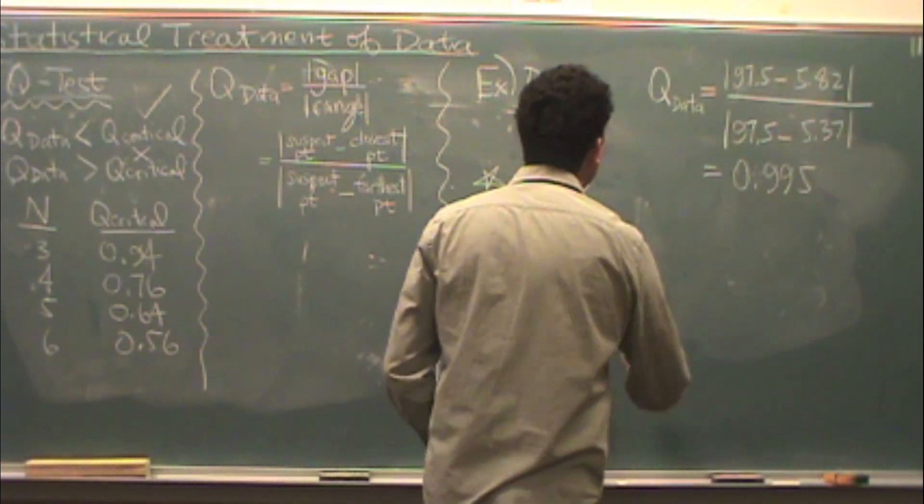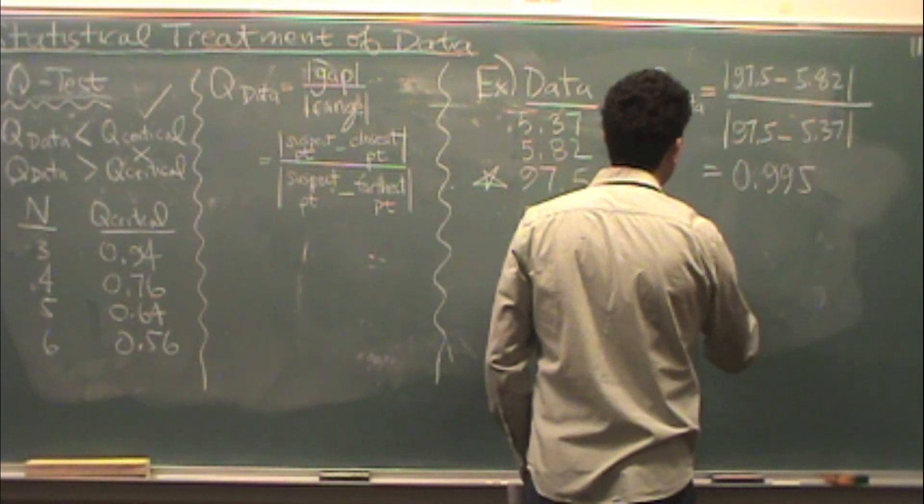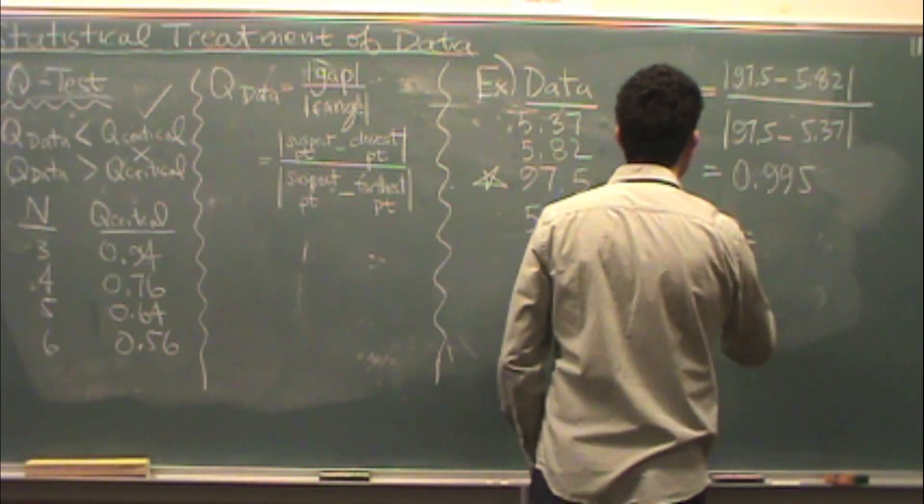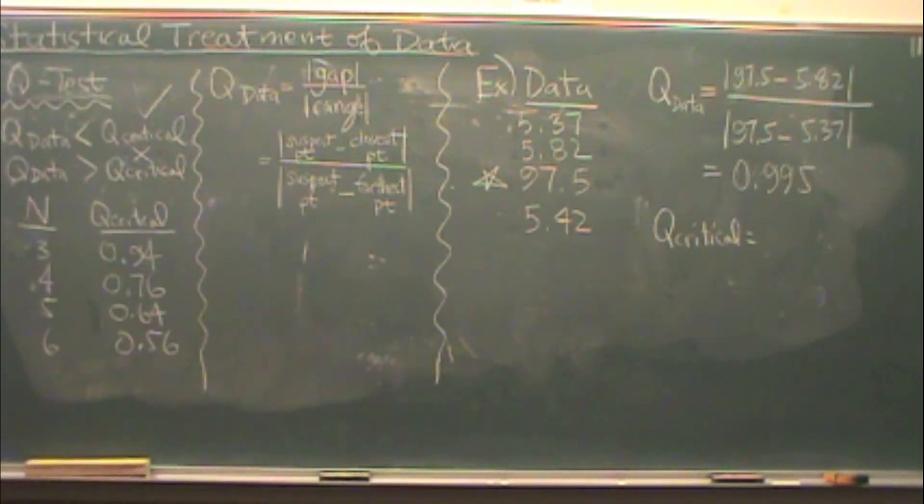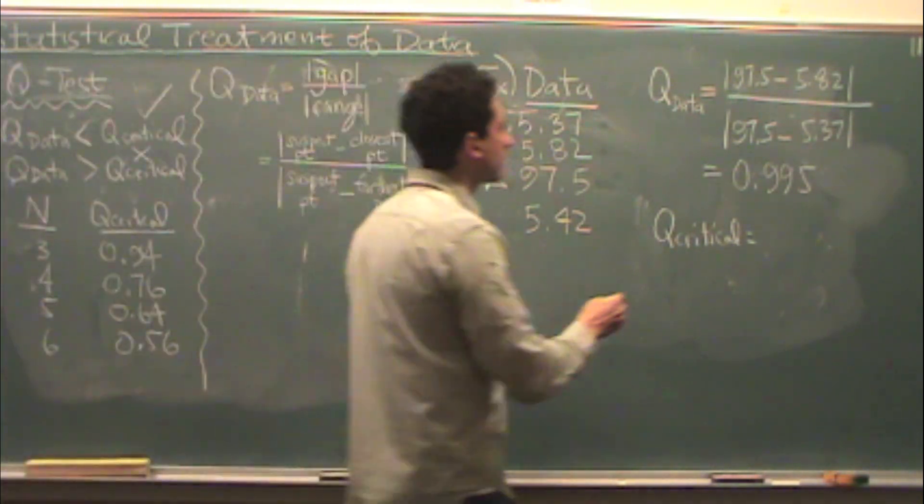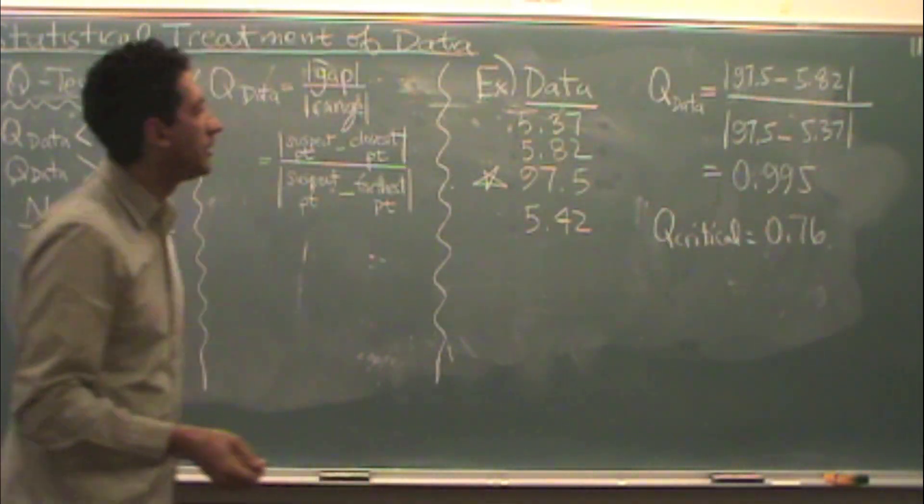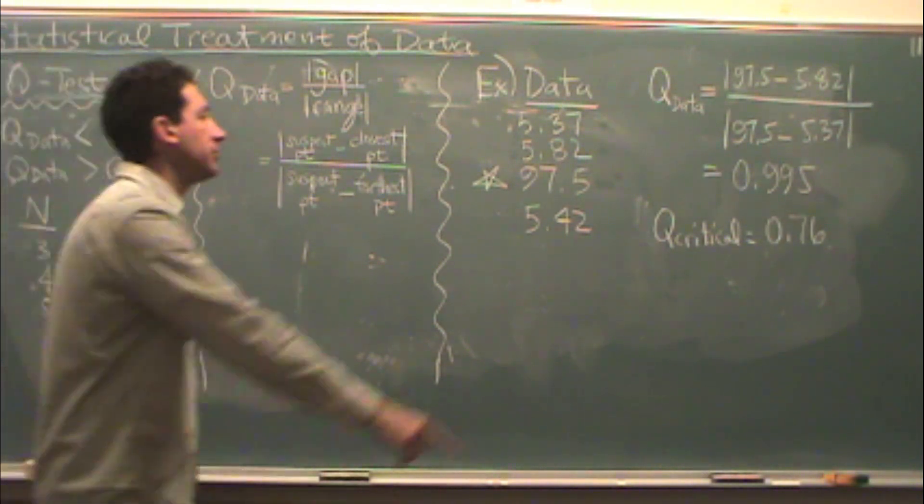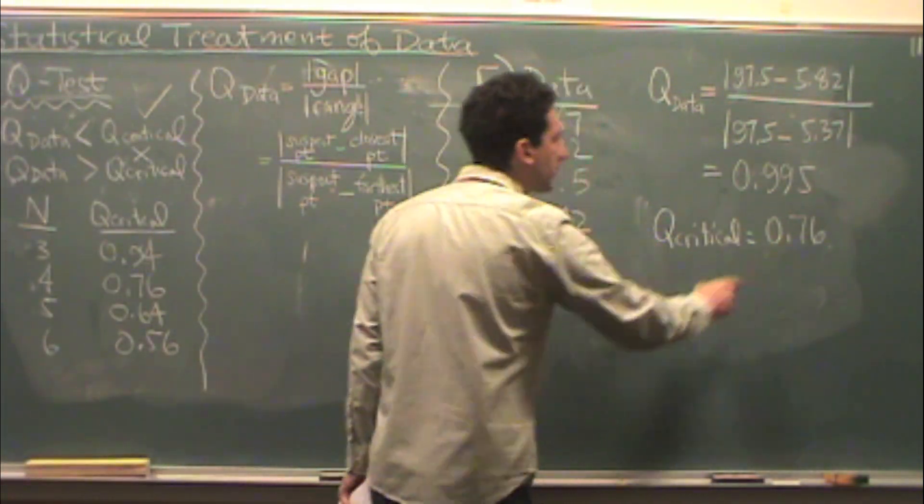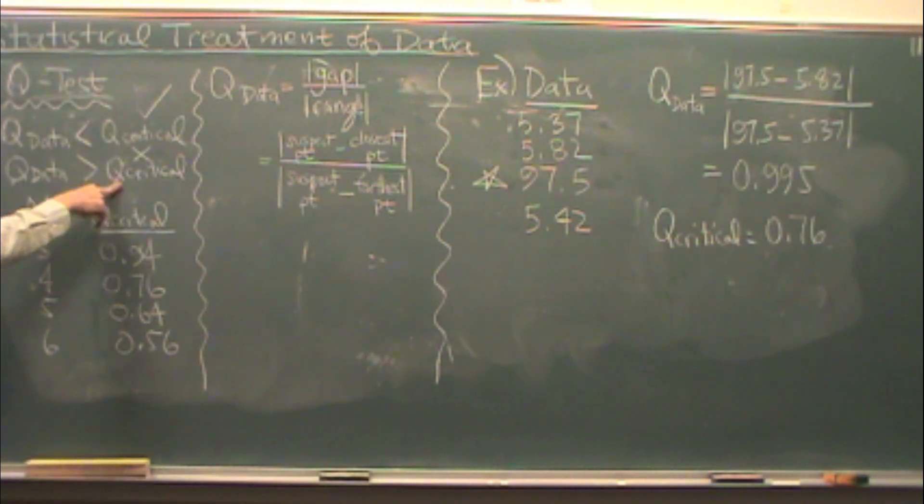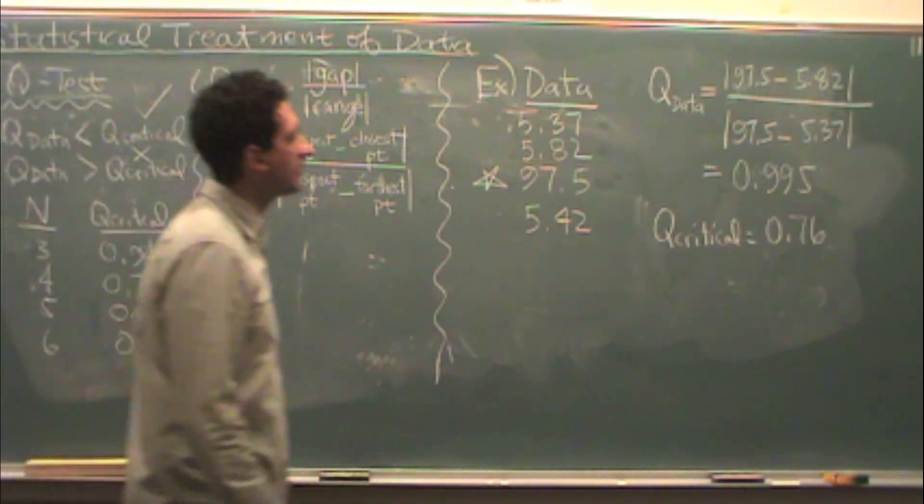Now I'm going to compare that with Q critical. Remember, Q critical comes from a table where these values are tabulated. I take a look at my data points - there's four total. That means my Q critical is 0.76. Now I see which one is bigger. In this case, Q data is bigger than the tabulated value. When Q data is bigger than the tabulated critical value, you throw it out. That is bad data.